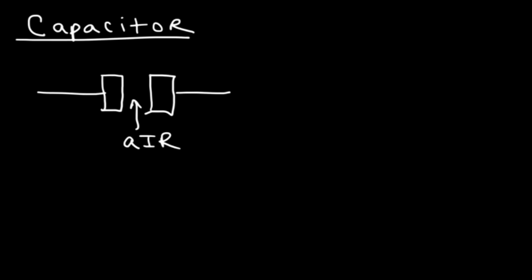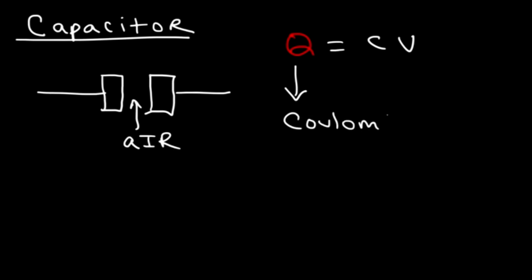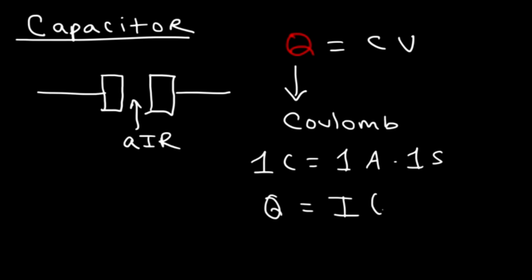Now there are some equations that you need to be familiar with. Q is equal to CV. Q stands for the charge, and electric charge is measured in coulombs. One coulomb is equal to 1 amp times one second, so Q is equal to IT, where I is the electric current in amps and T is the time in seconds. C represents the capacitance, and capacitance is measured in farads.